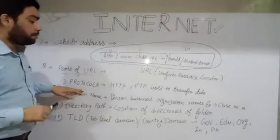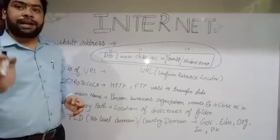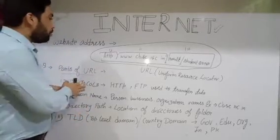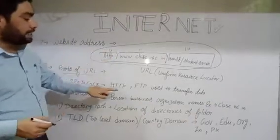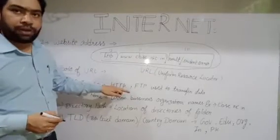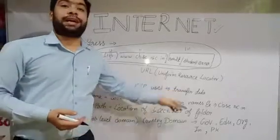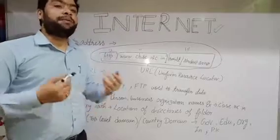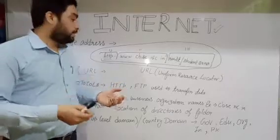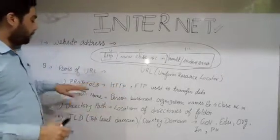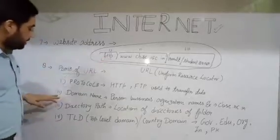The parts of a URL are: first, protocol — the set of rules and regulations, such as HTTP (Hypertext Transfer Protocol) or FTP (File Transfer Protocol). HTTP is used to open websites, while FTP is used to transfer data — meaning when we download or upload data from the internet, we use these protocols.